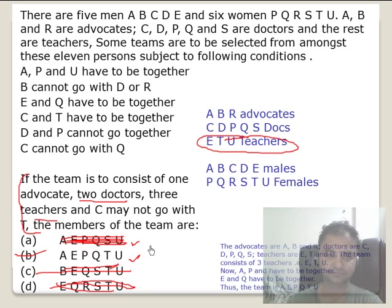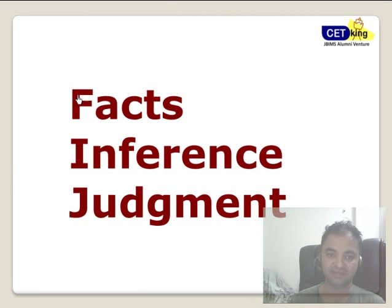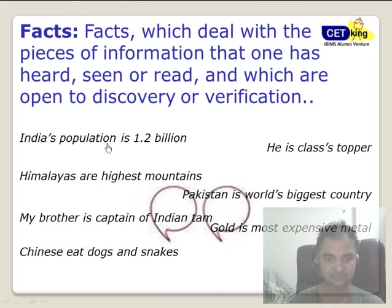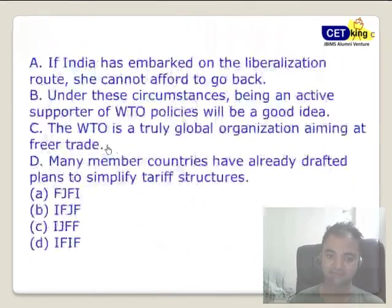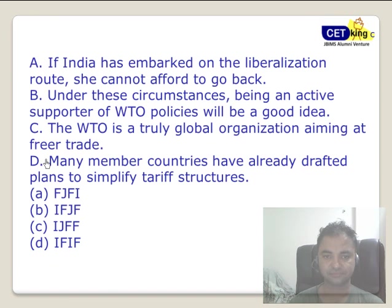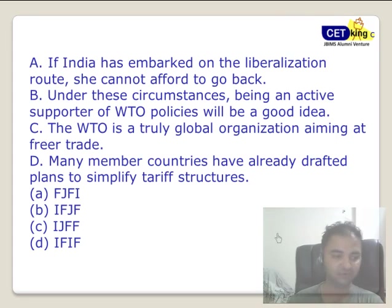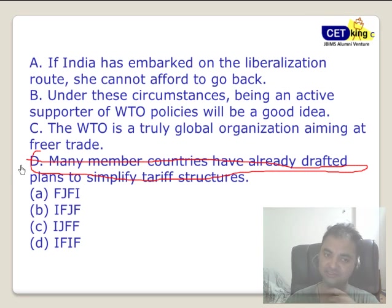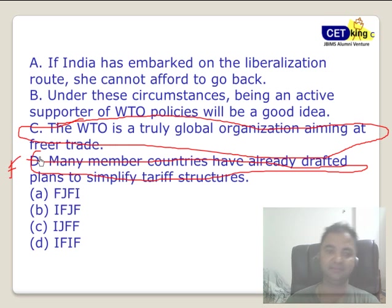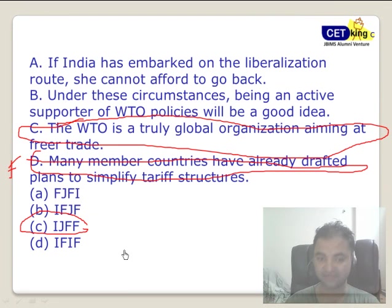Moving on to the next part: FIJ — Facts, Inference, and Judgment. There are some statements which are facts, some which are judgments, and some which are inferences. Please pause and try to do it yourself. Looking at the example: the last statement — 'many members of the countries have already drafted a plan' — is more of a fact. The second statement — 'WTO is a truly global organization aiming for free trade' — is also a fact. Because those two are facts, the only option left was C.